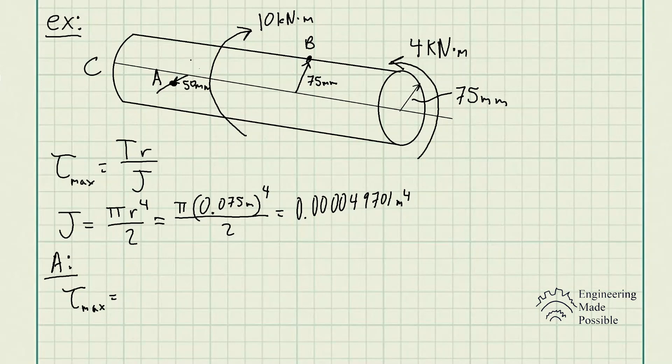So it's essentially 10 kilonewton meter take away the 4 kilonewton meter, which gives us a total torque of 6 kilonewton meter that point A would experience. Point A within this section of shaft, right?